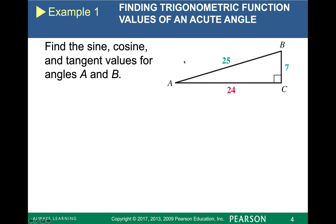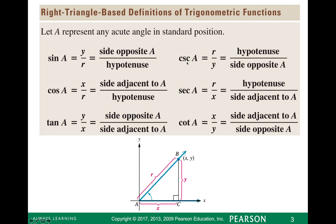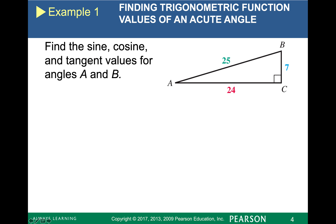We remember that these identities are going to be the reciprocals of those. If I'm in the coordinate plane, the convenient part is that I'm located here at the origin, so that my opposite would be y, and sine of A is y over r. But in this one, we're going to put this into a little bit different context dealing with a right triangle.